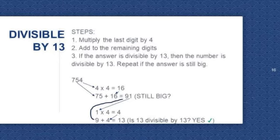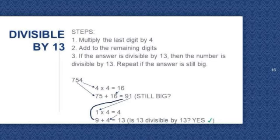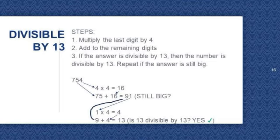Here's another example: 754. The last digit is 4. 4 times 4 is equal to 16. Now we need to add 16 to the remaining digits, which are 75. 75 plus 16 is equal to 91. If it's still big, then we can repeat the steps. The last digit of 91 is 1, so 1 times 4 is equal to 4. Add 4 to the remaining digit, which is 9. 9 plus 4 is equal to 13. Is 13 divisible by 13? Of course. So 754 is divisible by 13.